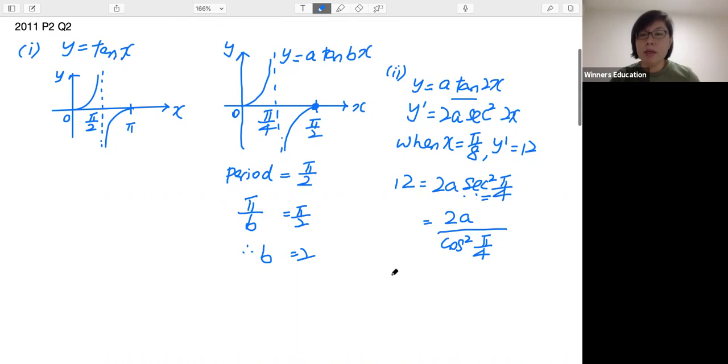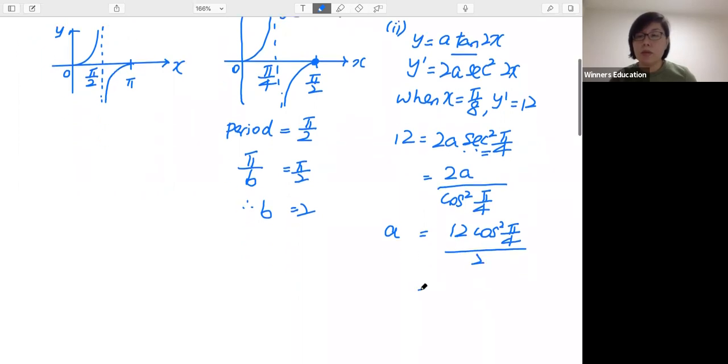a is simply 12 cos²(π/4) over 2. And I can simplify it to be 6 cos²(π/4).